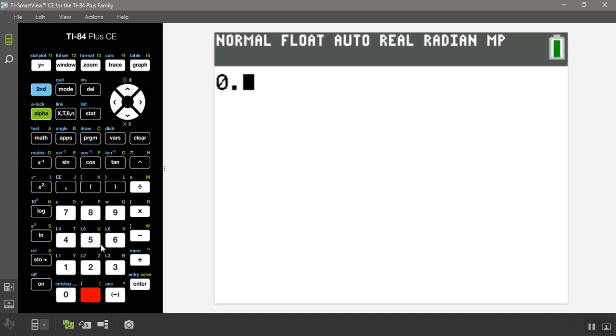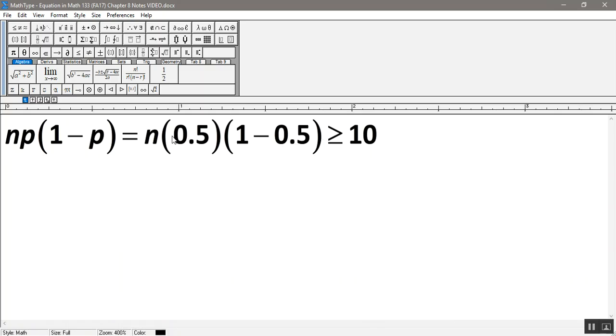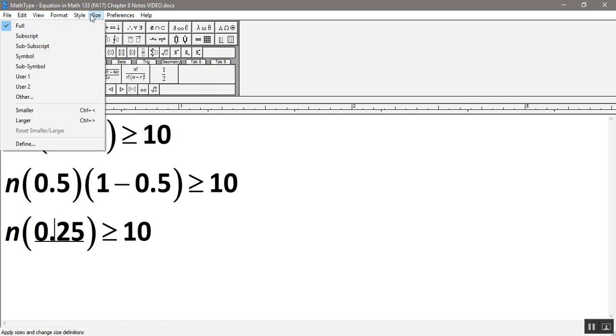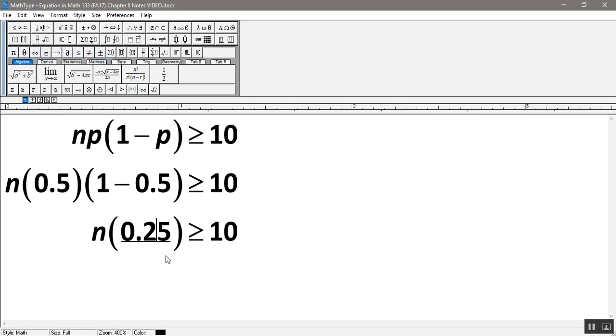So I'm going to take 0.5 times 1 minus 0.5. And I get 0.25. So I know that N is multiplied by 0.25. So I want this to be greater than 10. So I want N times 0.25 to be greater than 10. And the way you solve this is you divide both sides, because this is currently multiplication.